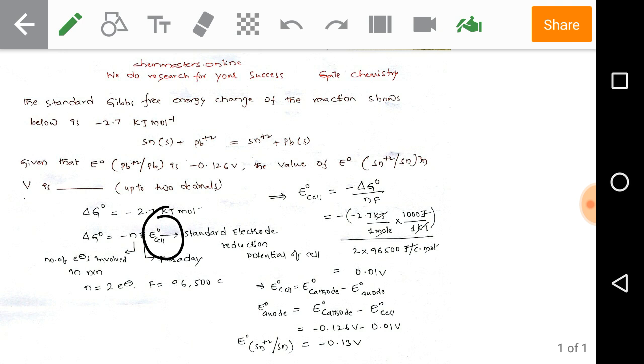Using this formula we can calculate E⁰cell, the standard electrode reduction potential of the cell. That is minus ΔG⁰ by nF. Substitute the values.